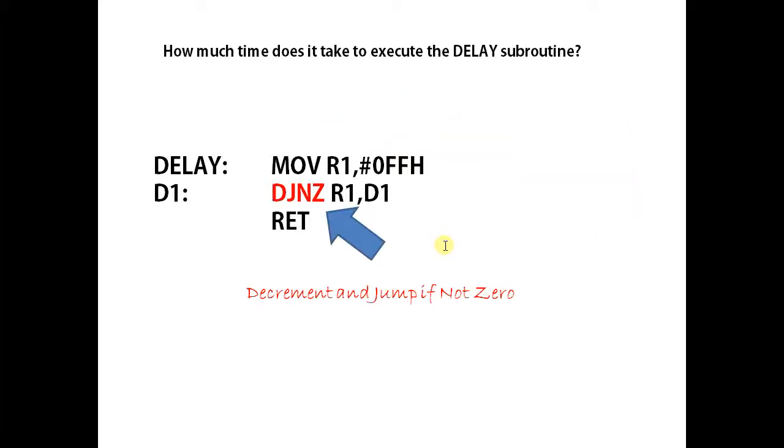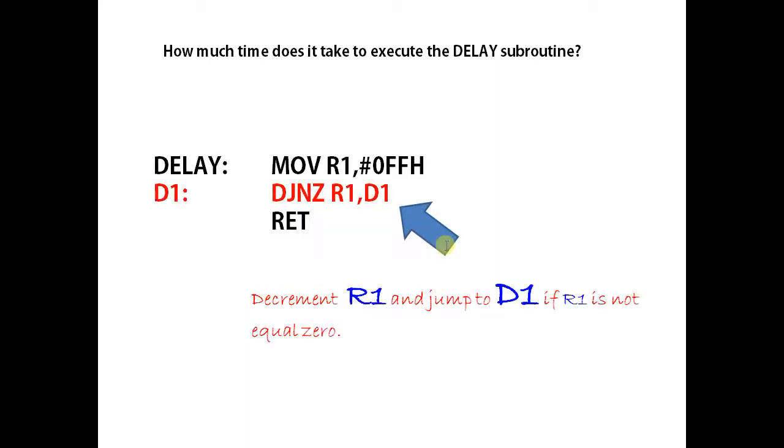DJNZ: decrement and jump if not zero. Decrement R1 and jump to D1 if R1 is not zero.